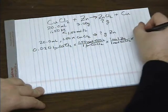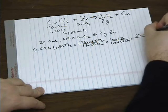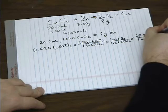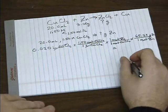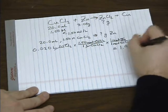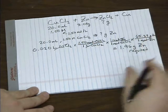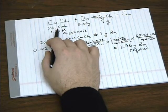And again, we convert moles to grams. Zinc's molar mass is 65.39 grams per mole. So that gives us 1.96 grams of zinc. That's required to react with all 20 milliliters of copper 2 chloride.